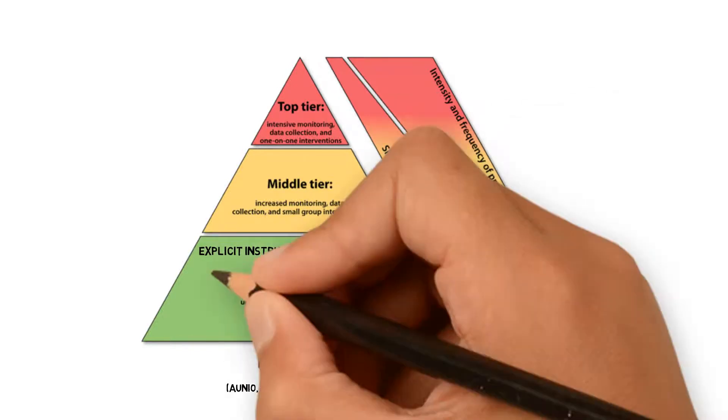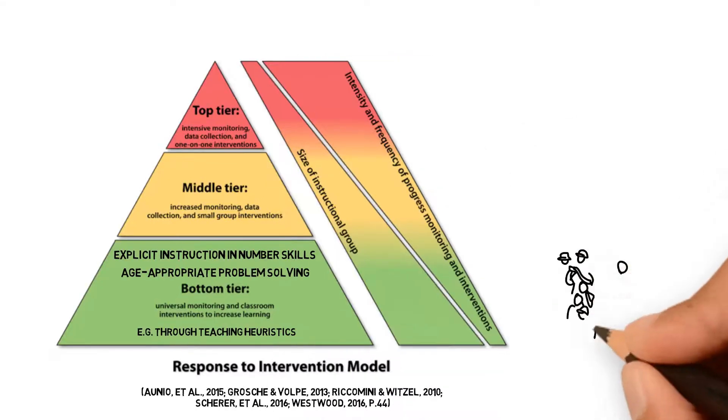Tier 1 involves explicit instruction in number skills and age-appropriate problem solving through teaching heuristics, for example.